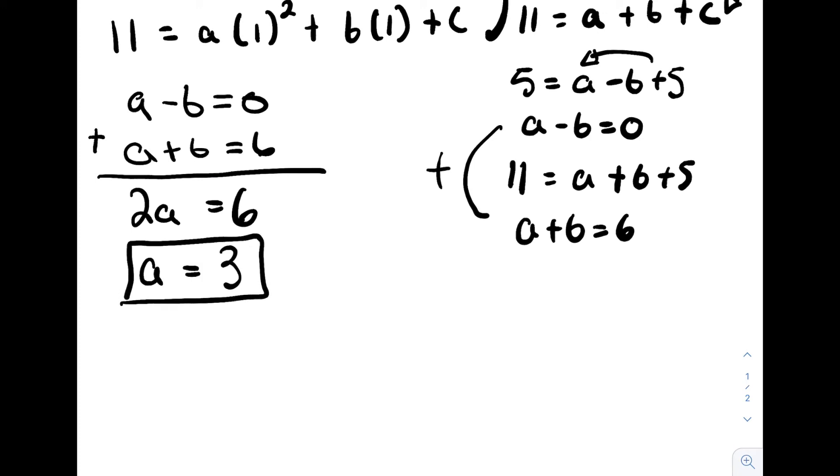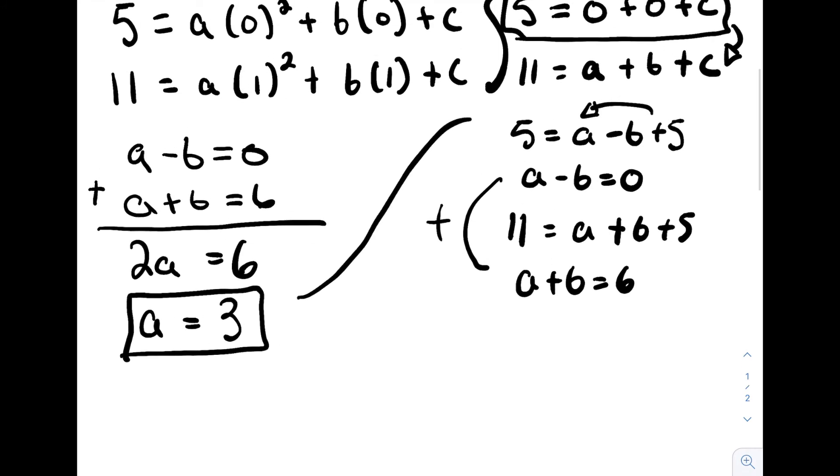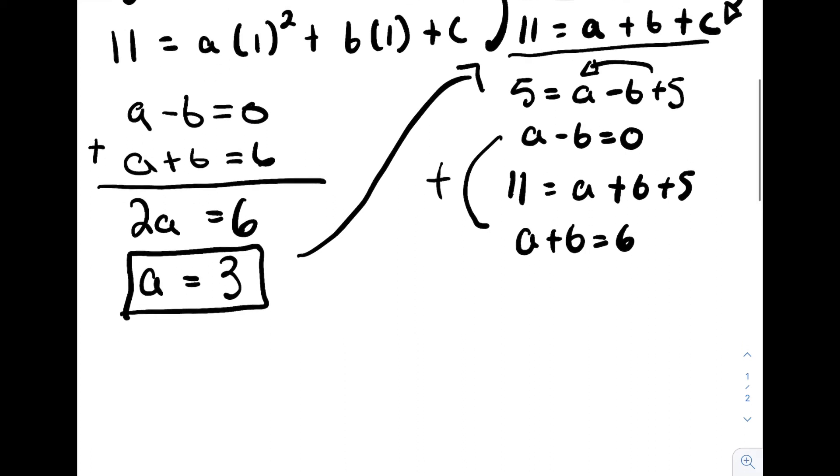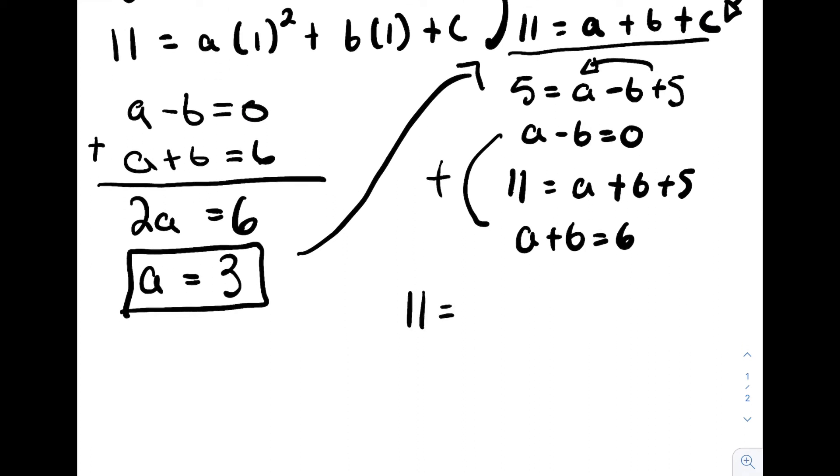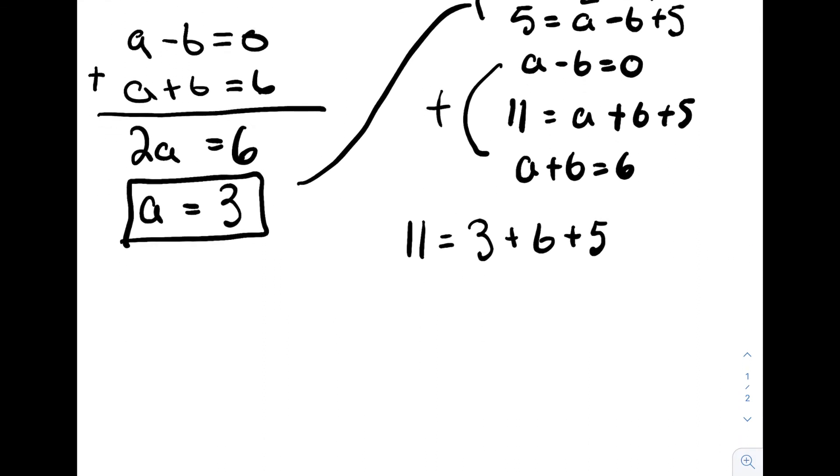And now to find the b, we can just plug it back in to one of our original formulas. So if we were to choose this one, then 11 equals a, which is 3, plus b, and plus 5, because we had already found c equals 5. So we carry over the 5 and the 3 to the other side. 11 minus 5 is 6, minus 3 is 3. So b is equal to 3.